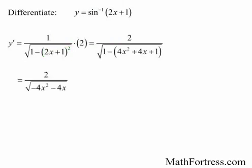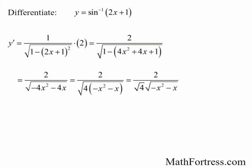Here we factor out a 4 from under the radical. By factoring out the 4, we can take the square root of 4, which is 2, and that cancels with the 2 in the numerator, giving us the final expression equal to 1 over the square root of negative x squared minus x.